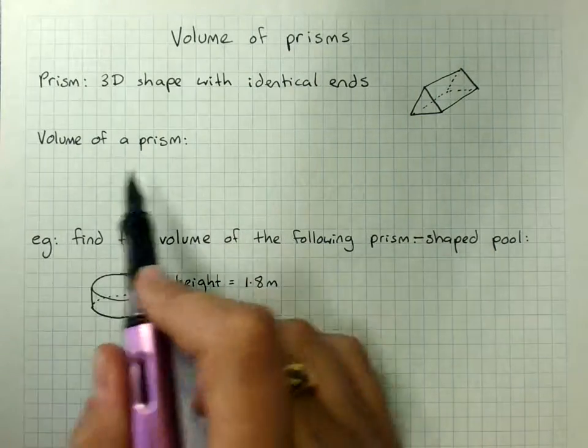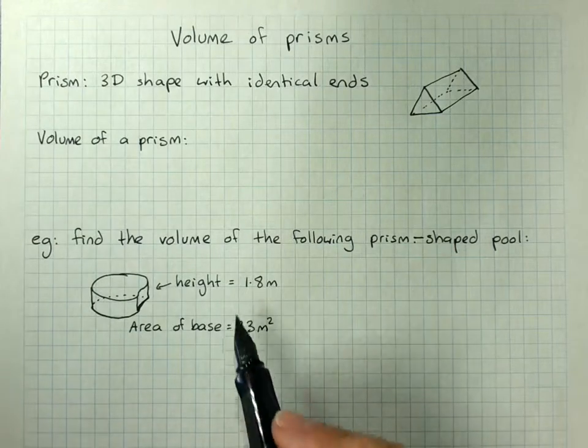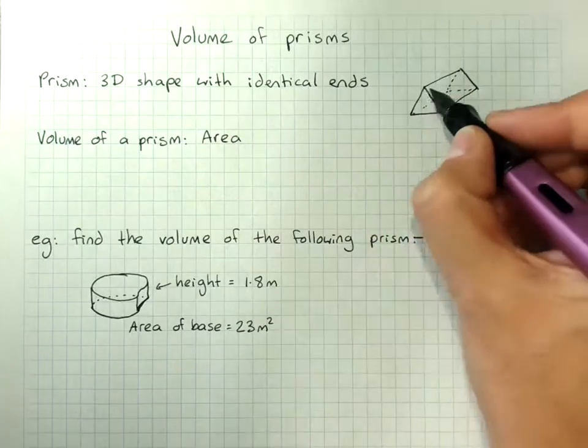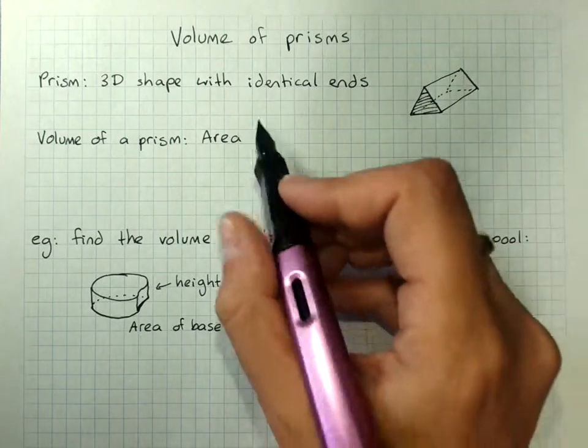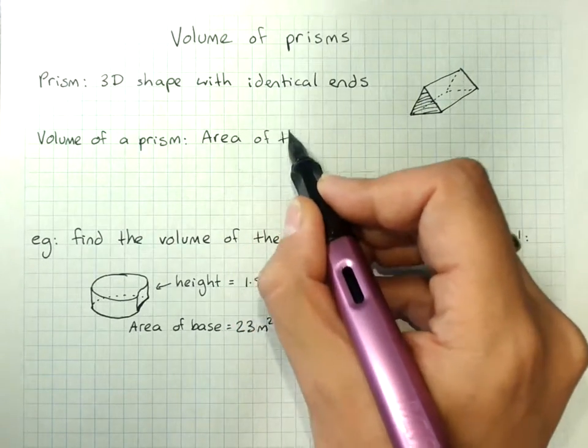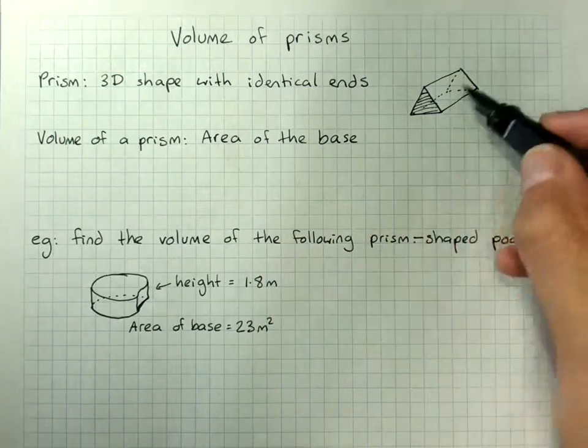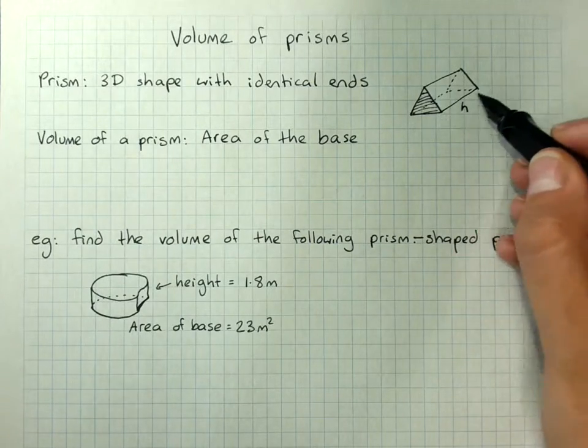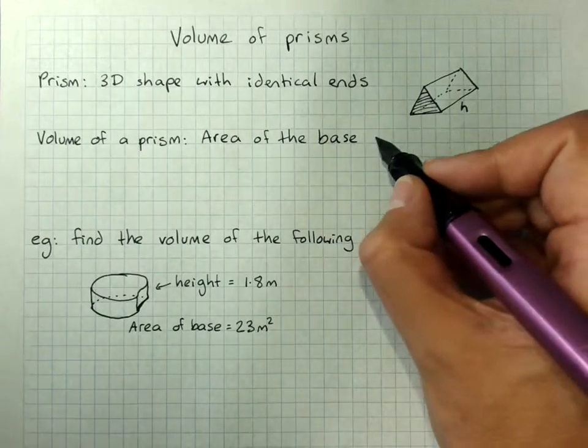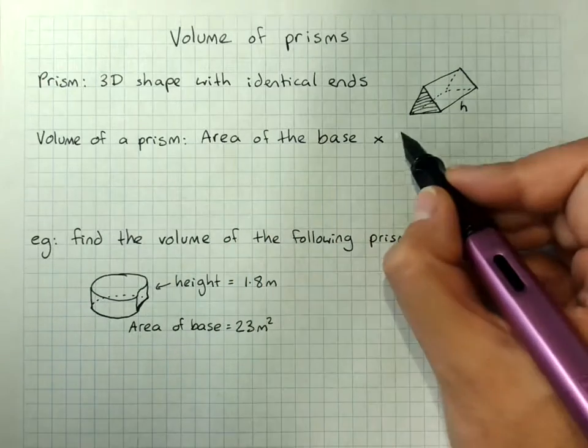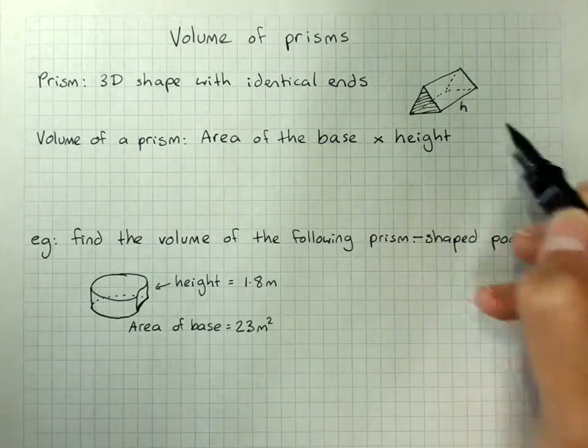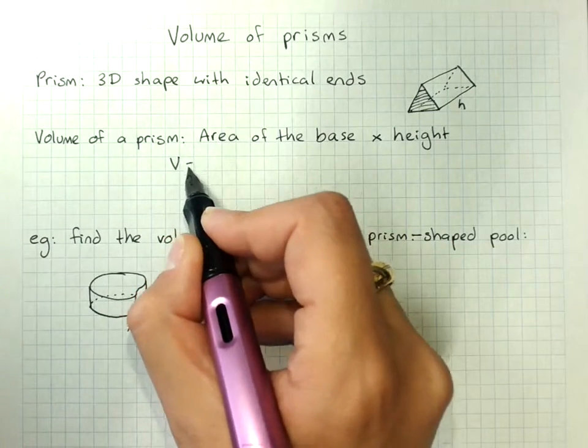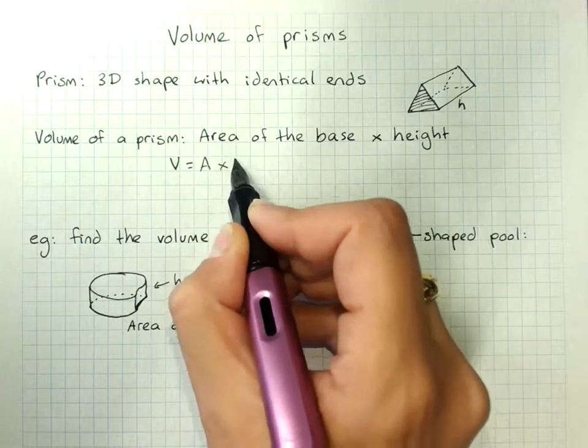And to find the volume of a prism, it's the area of the end, which we'd call the base. And if we stood that on its base, then the height would be that distance there. And we multiply the area of the base by the height of the prism. And so that's V equals A times H.